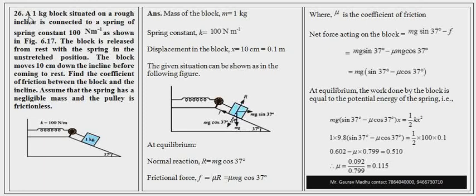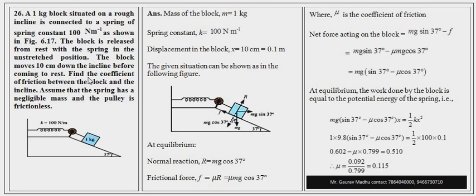Question number 26. A 1 kg block situated on a rough incline is connected to a spring of spring constant 100 N/m as shown in the figure. The block is released from rest with the spring in the unstretched position. The block moves 10 cm down the incline before coming to rest. Find the coefficient of friction between the block and the incline.